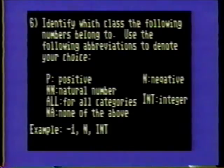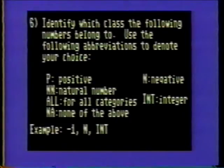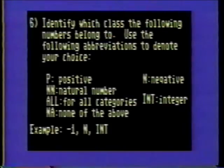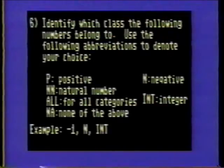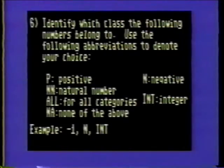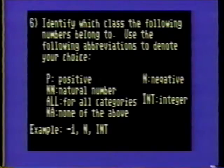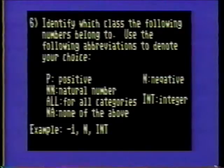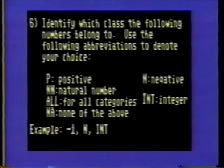Problem 6. Identify which class the following numbers belong to, using these abbreviations: P for positive, N-N for natural number, A-L-L for all categories, N-A for none of the above, N for negative, and I-N-T for integer. For example, minus 1 is a negative number and an integer. Classify the numbers as directed in the workbook.